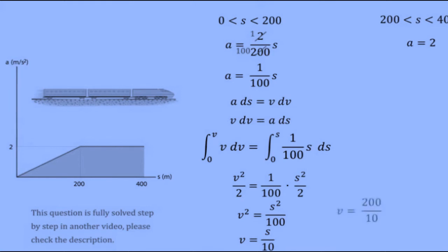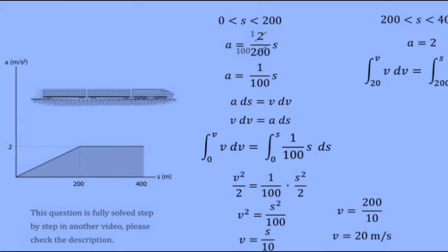In this problem, the velocity of the train at 200 meters is 20 meters per second. Now for the next segment, we just do the same as before. This time, the lower bounds are the values we calculated.